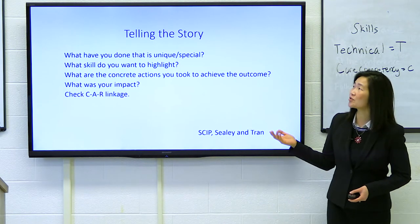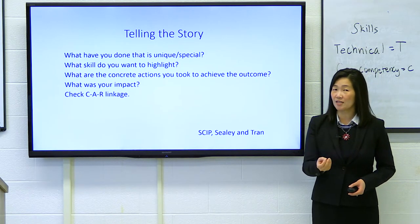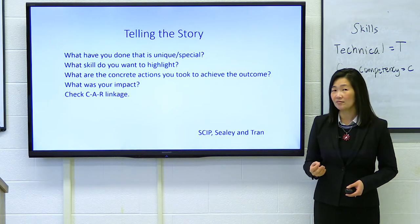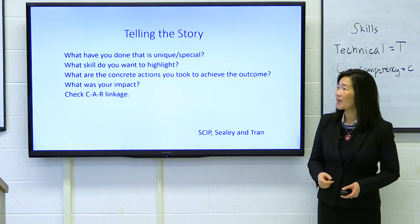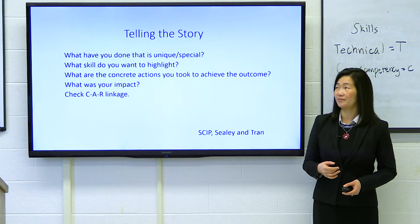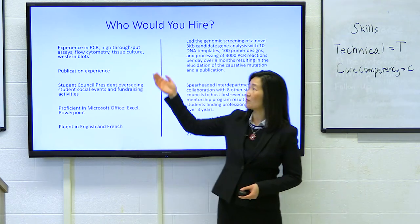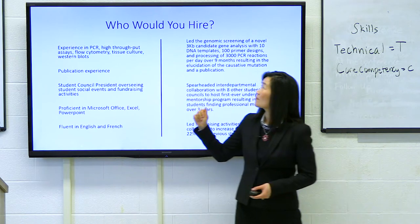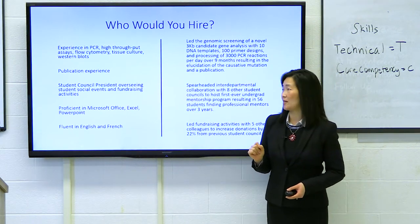So this CAR statement tells the exact same story as the previous one, but highlights the verb motivate. When you're telling your story, think about what you've done that's unique or special for that organization or activity. What skill and action verb do you want to highlight? What actions did you take to achieve the outcome? What was your impact? And check for the CAR linkage. So here are some examples. For CVs, we're used to a list of everything we've ever done — but now you want to make these short mini stories using CAR statements.